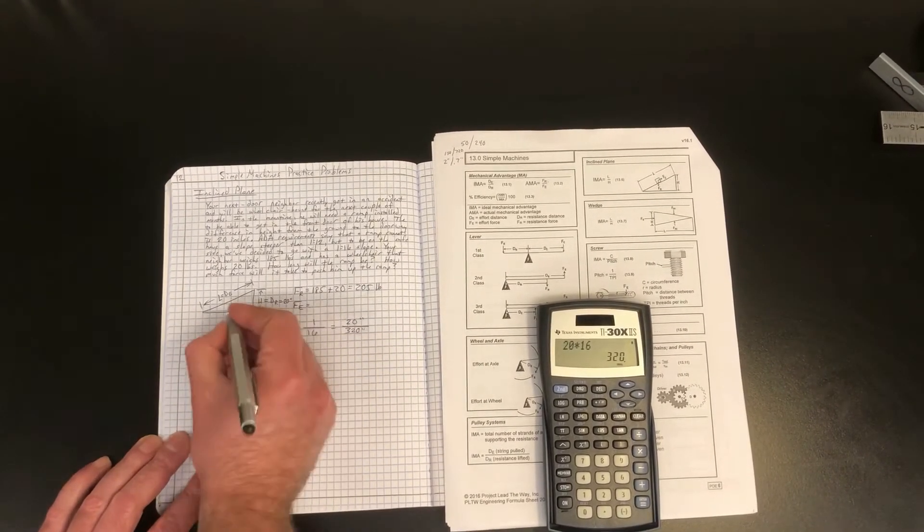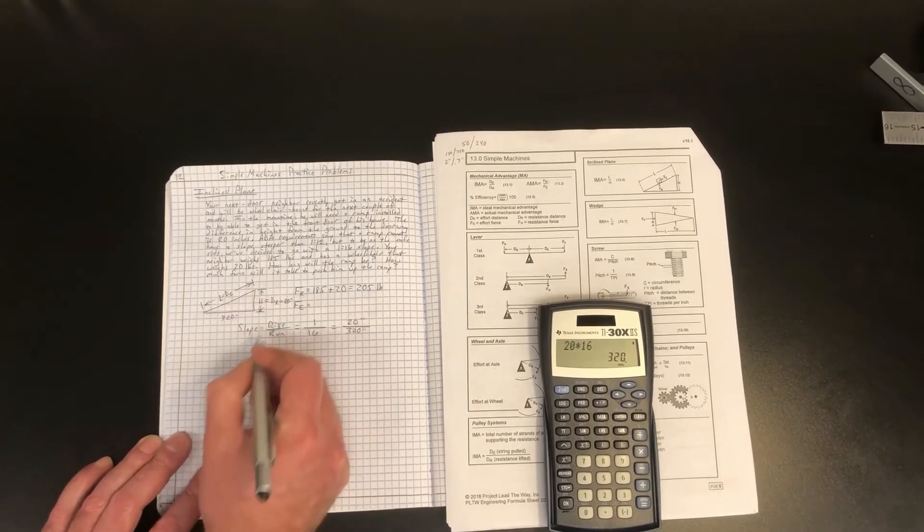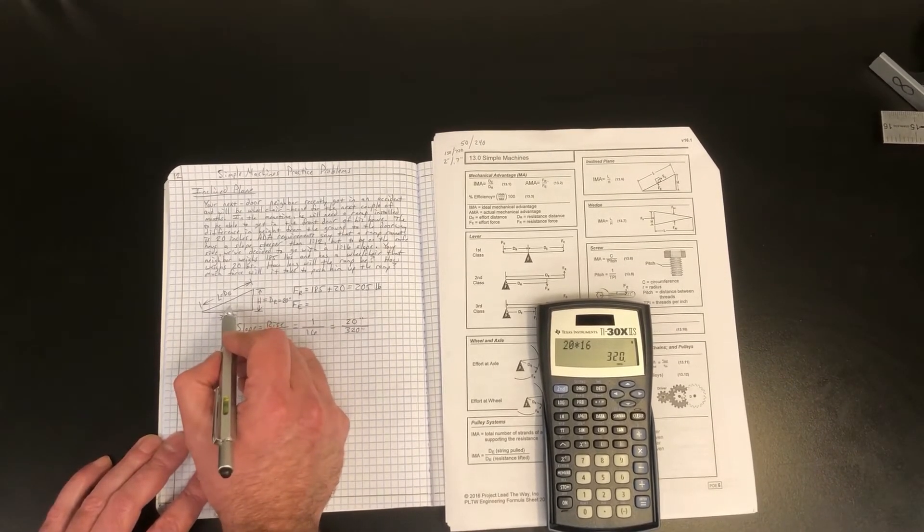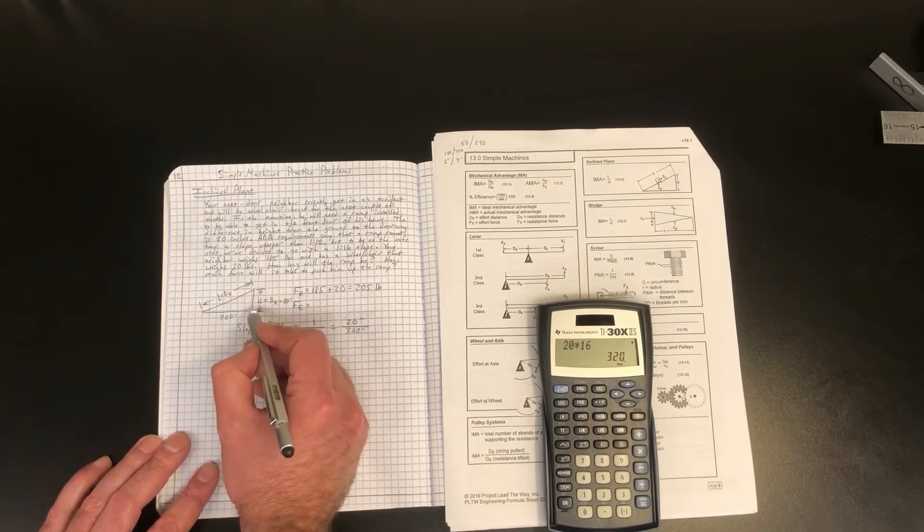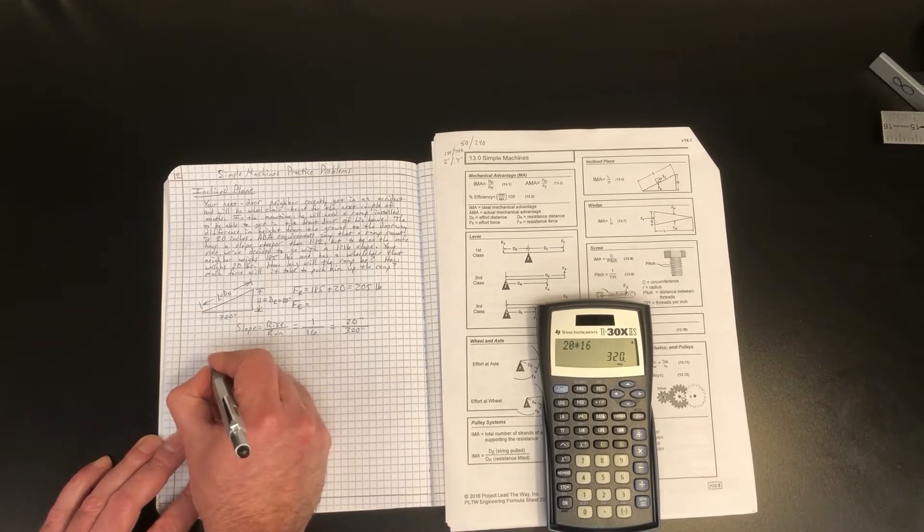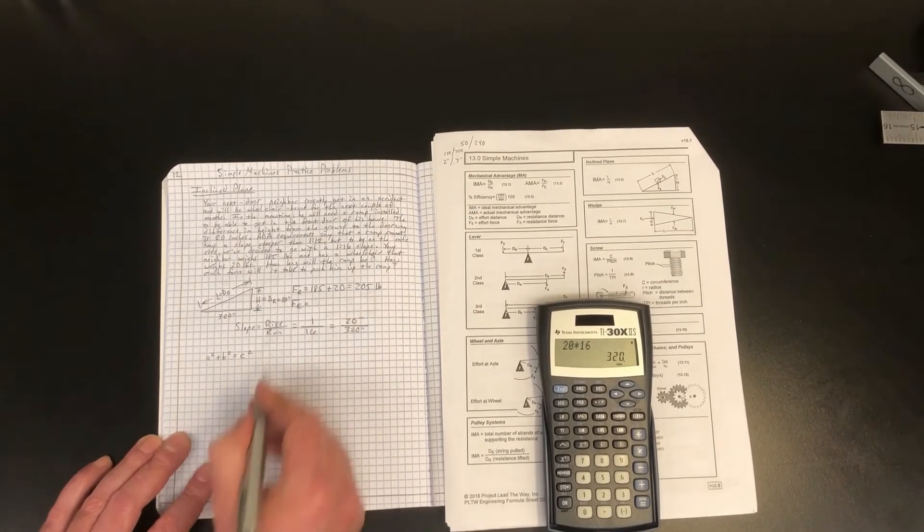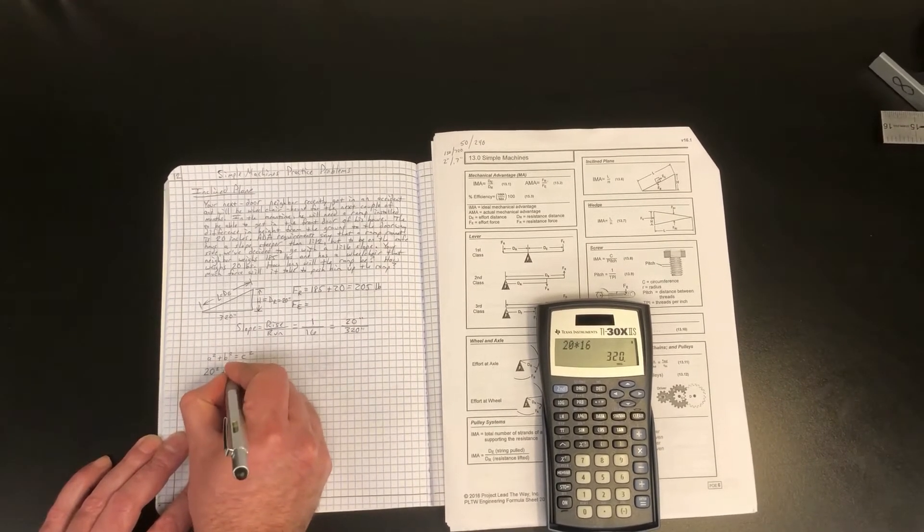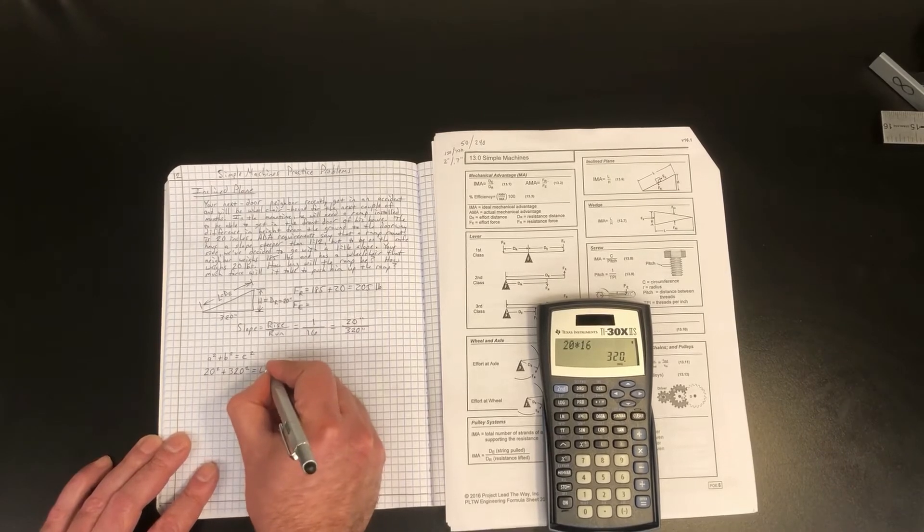Now, as far as this diagram goes, that 320 inches is actually this bottom leg of the triangle right here. So that doesn't actually give us L or DE. So we're going to have to calculate that now to find this third leg of the triangle. We have a right triangle right here, and we know that in order to find the third leg of a right triangle, we can use A squared plus B squared equals C squared for the Pythagorean theorem. So A squared plus B squared equals C squared. And we have A and B right here, so we'll say 20 squared plus 320 squared equals L squared.